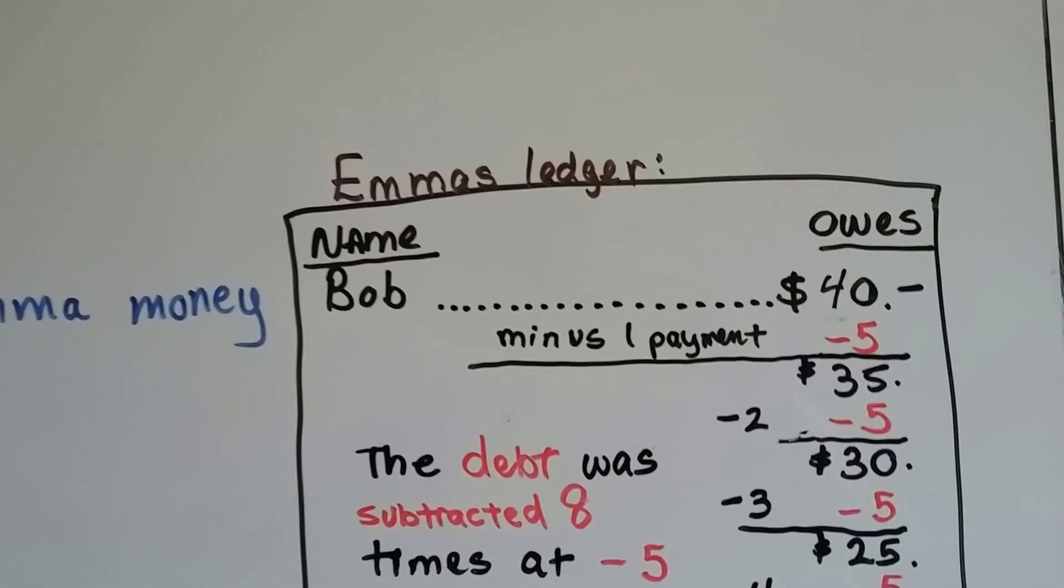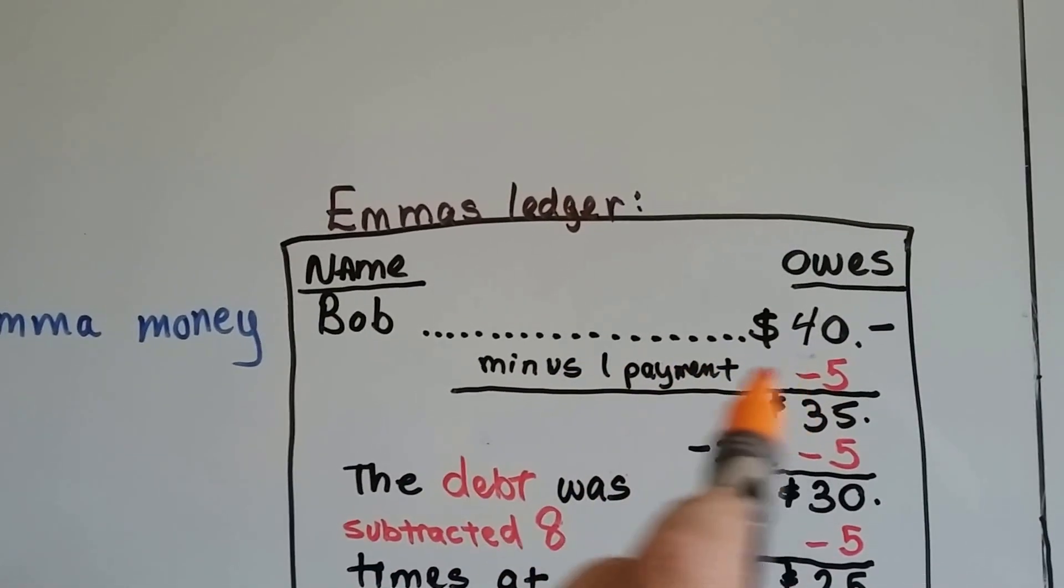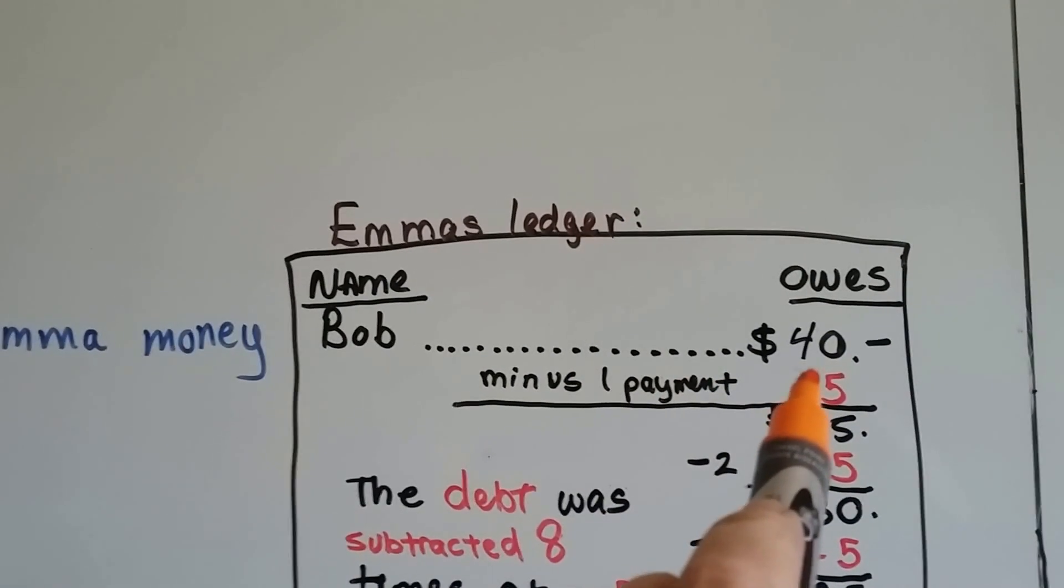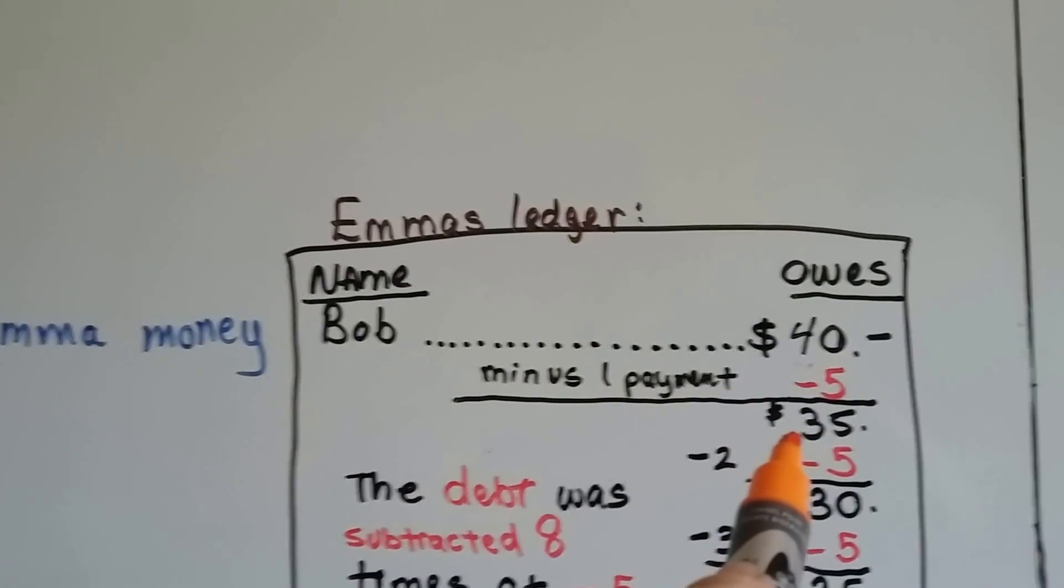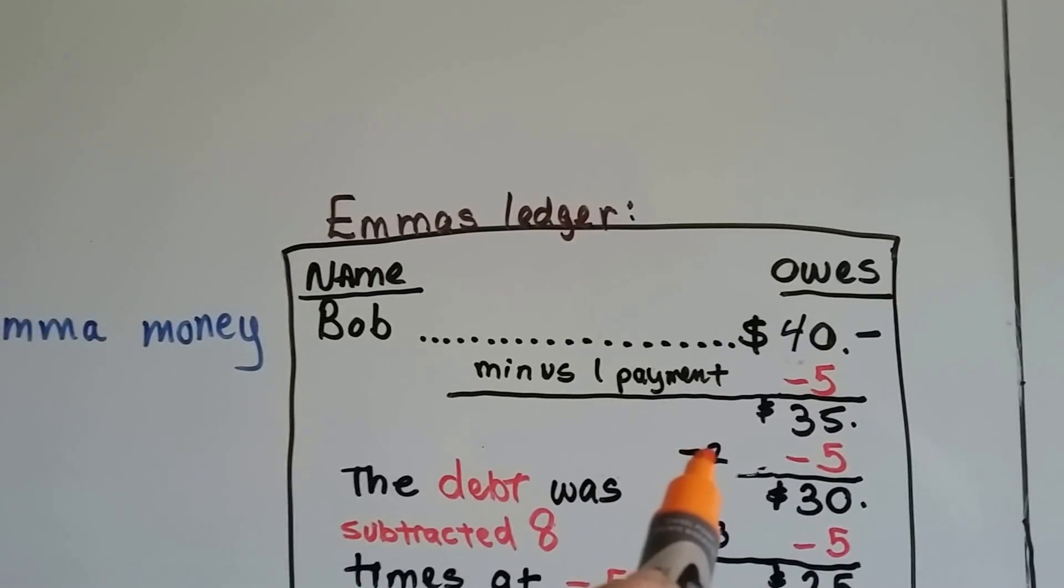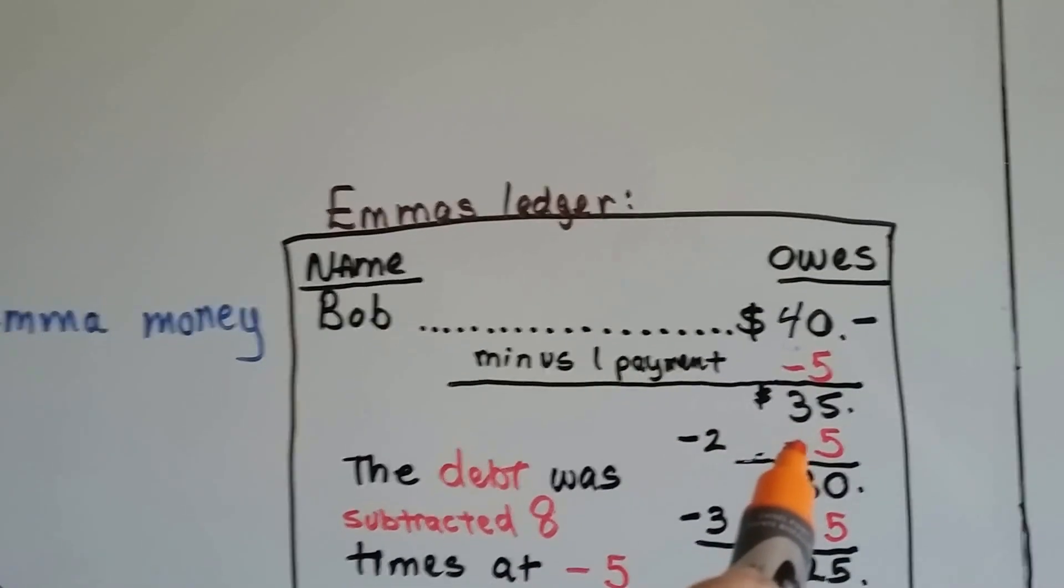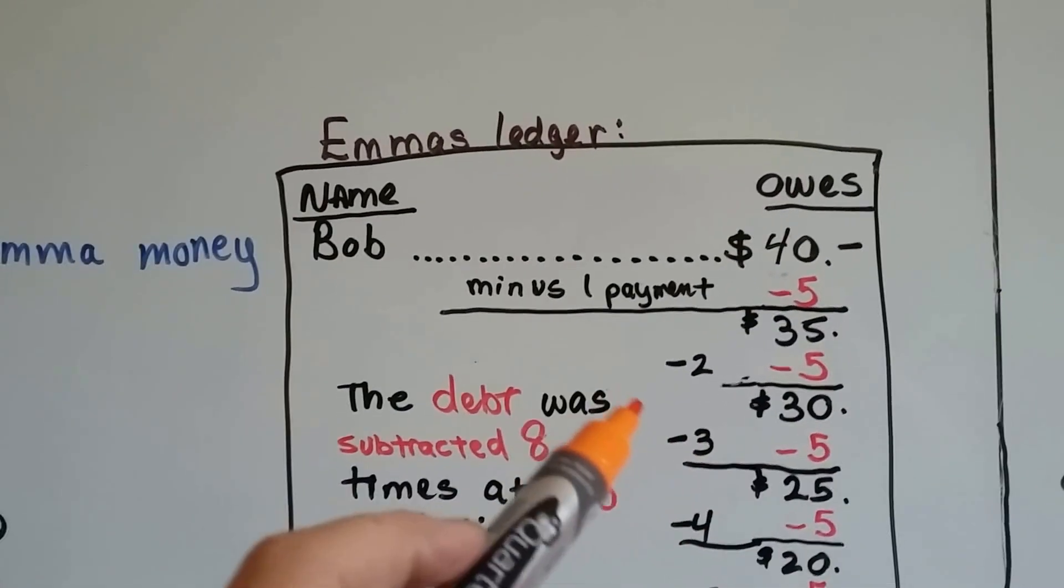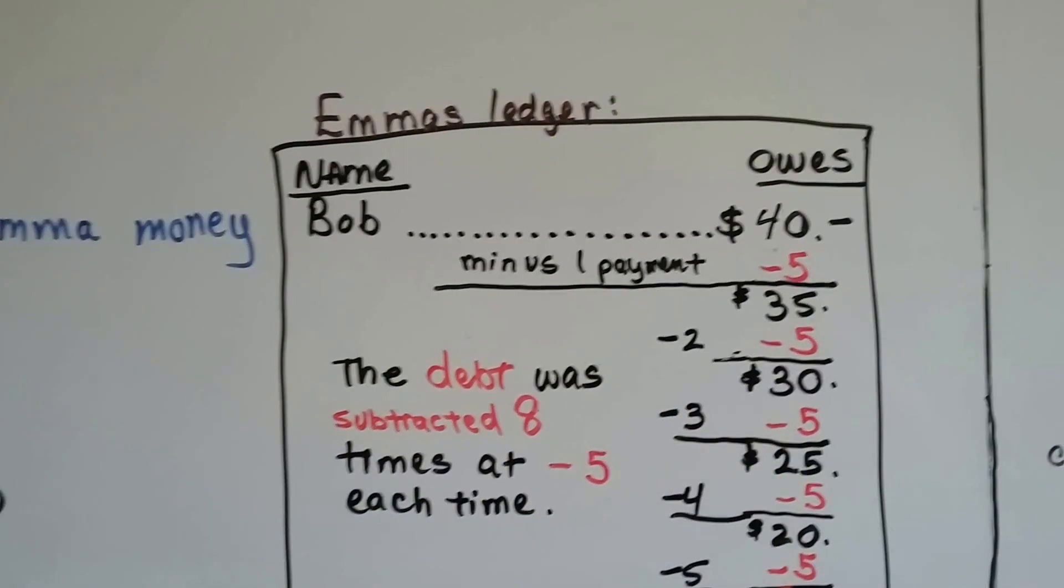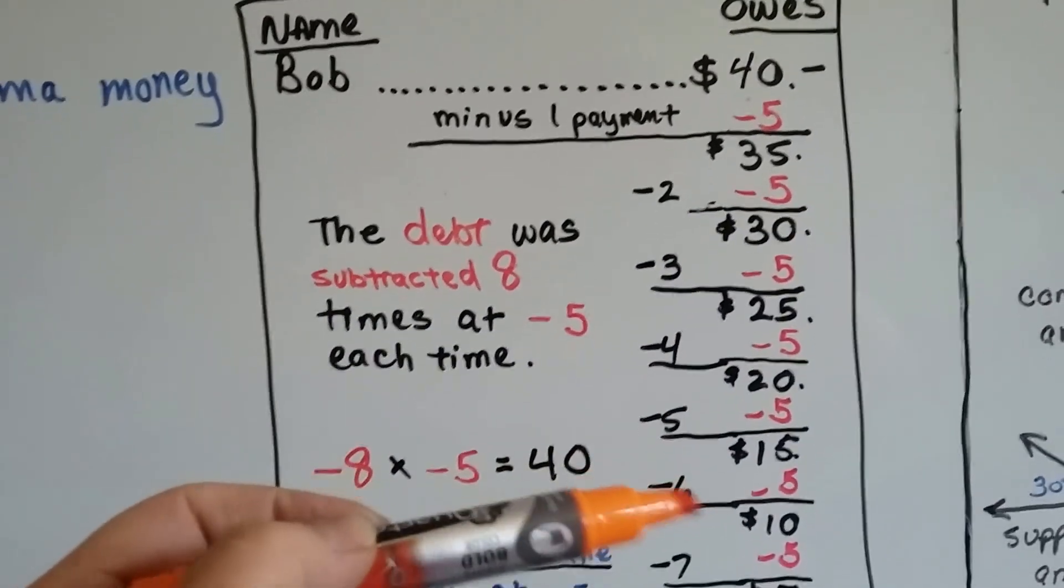Alright, he owes her $40. And then he takes away one bit of the debt. She takes away one payment because he gives her $5. So now Bob owes Emma only $35. Well, the next week, she takes away another part of the debt. Now it's minus two parts of the debt because he gives her another $5. And each week, she takes away a piece of the debt. $5, $5, $5. She's subtracting the $5 from what he owes because she's taking away a piece of the debt.